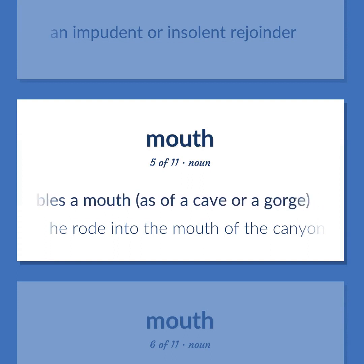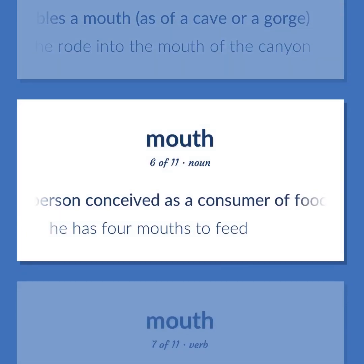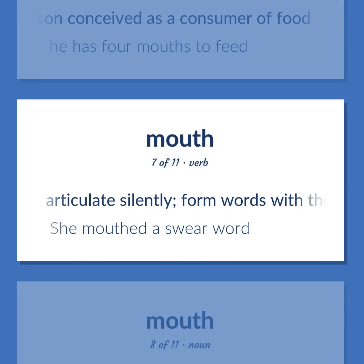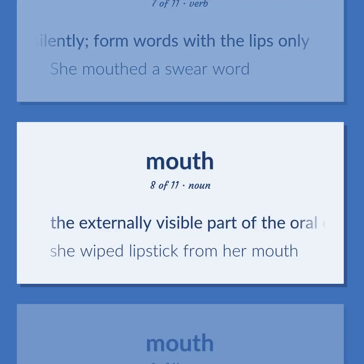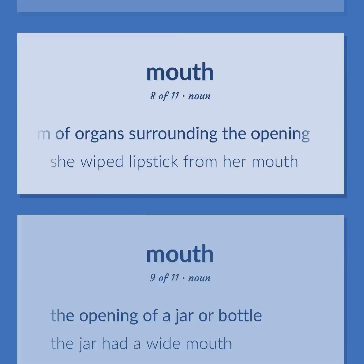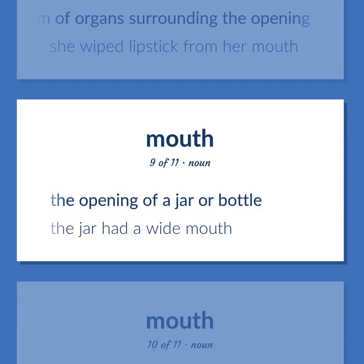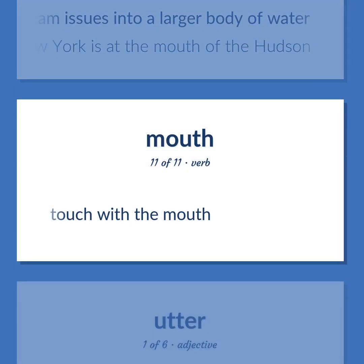A person conceived as a consumer of food — he has four mouths to feed. Articulate silently; form words with the lips only — she mouthed a swear word. The externally visible part of the oral cavity on the face and the system of organs surrounding the opening — she wiped lipstick from her mouth. The opening of a jar or bottle — the jar had a wide mouth. The point where a stream issues into a larger body of water — New York is at the mouth of the Hudson. Touch with the mouth.